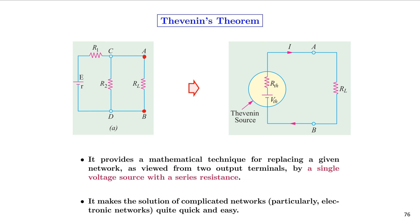Once we have Vth and Rth, we can find out the total current I flowing through the resistor. Thevenin's theorem provides a mathematical technique for replacing a given network, as viewed from two output terminals, by a single voltage source with a series resistance.